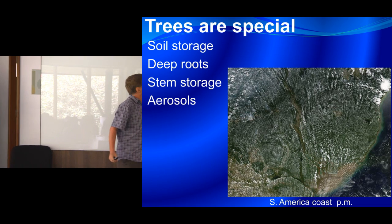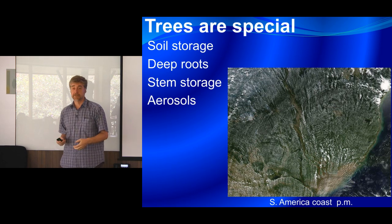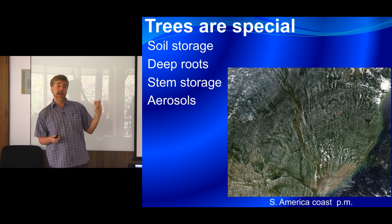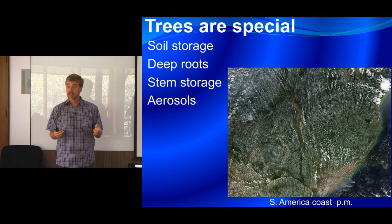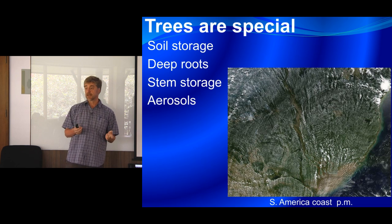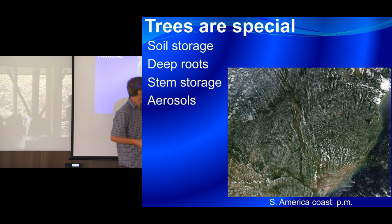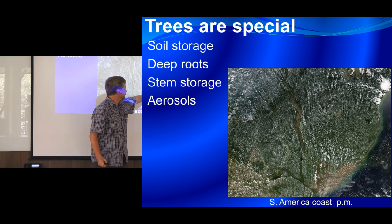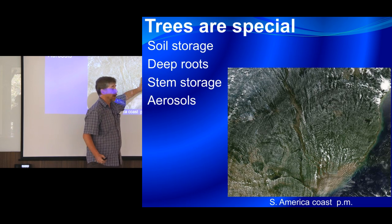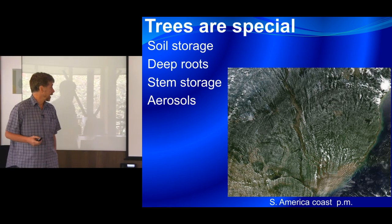Forests are also a big source of aerosols — particles in the atmosphere that encourage water to condense. If you want to have clouds and water condensing out of the atmosphere, it really helps to have impurities in the air. Forests are a really good source of these impurities, often biological particles. For example, in an image of the Amazon basin in the afternoon, you can see cloud starting to form over the forest, but not so much over the ocean — and a lot of this is to do with the chemistry of particles coming up into the atmosphere.